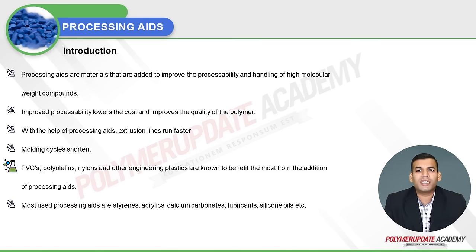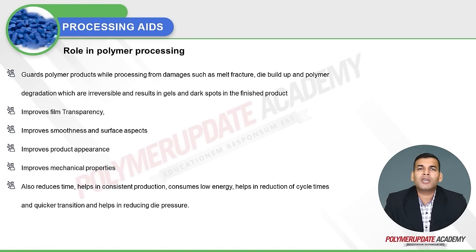The most used process aids include styrenics, acrylics, calcium carbonates, lubricants, silicon oils, and so on. Their role in polymer processing is to guard polymer products while processing from damages such as melt fracture, die buildup, and polymer degradation, which are irreversible and result in gels and dark spots in the finished product.